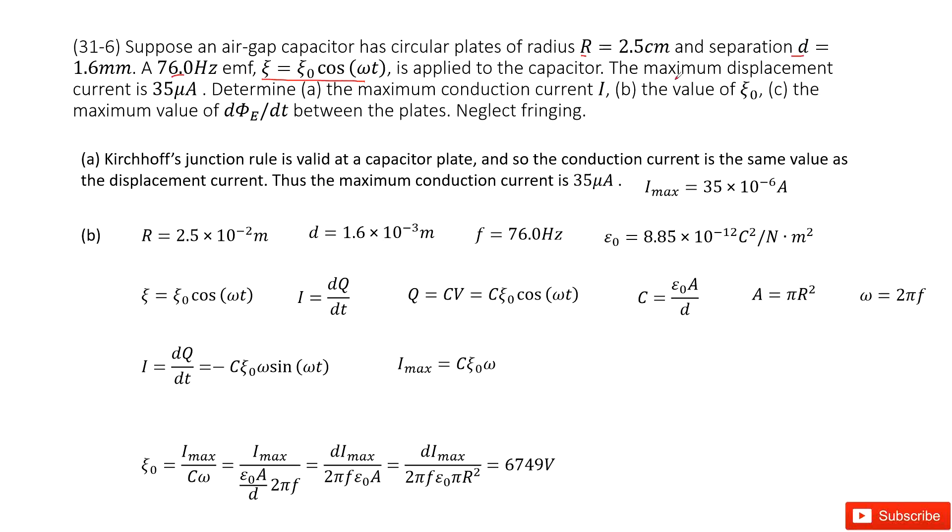The first one asks you to find the maximum displacement current, which is also given. It asks you to find the maximum conduction current. There we can consider the current is conserved. So what is current getting in? Maximum displacement current.